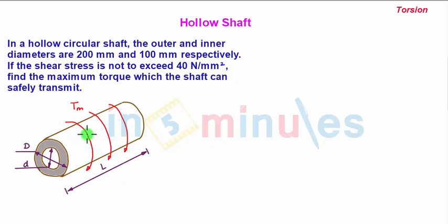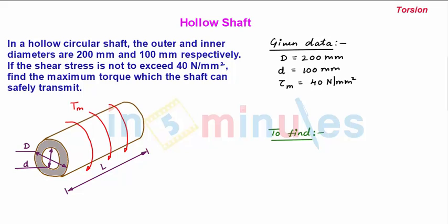Now this shaft is being subjected to maximum torque Tm. So in this problem the given data is the outer diameter D is 200 mm, whereas inner diameter is 100 mm, and they have given that the maximum stress τm is equal to 40 Newton per mm square. And in this problem they have asked to find the maximum torque which a shaft can transmit so as not to exceed the shear stress as 40 Newton per mm square.